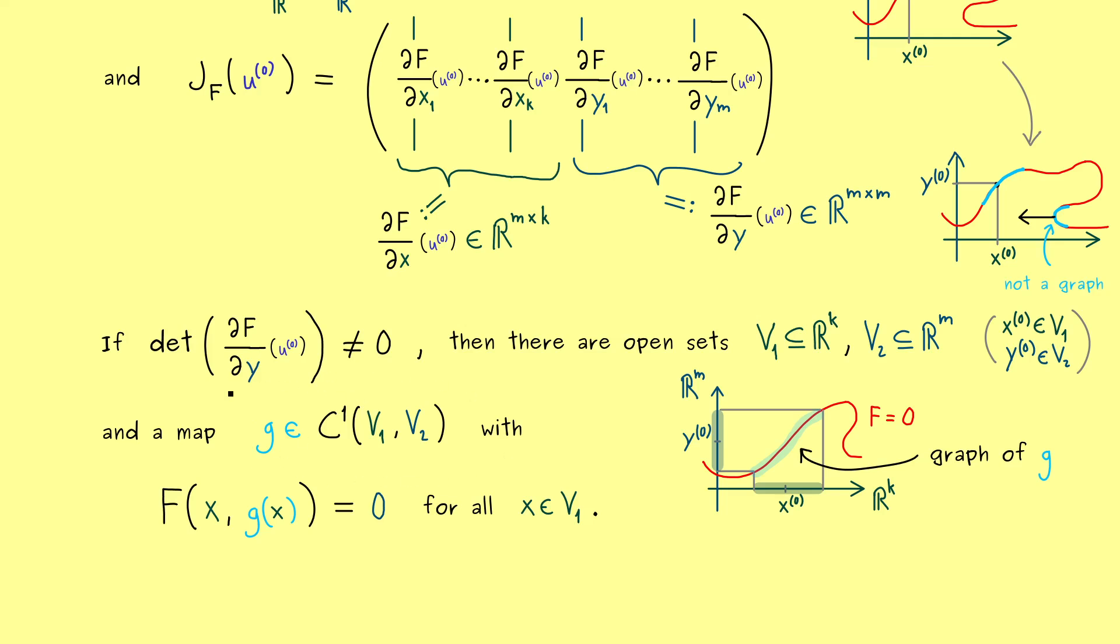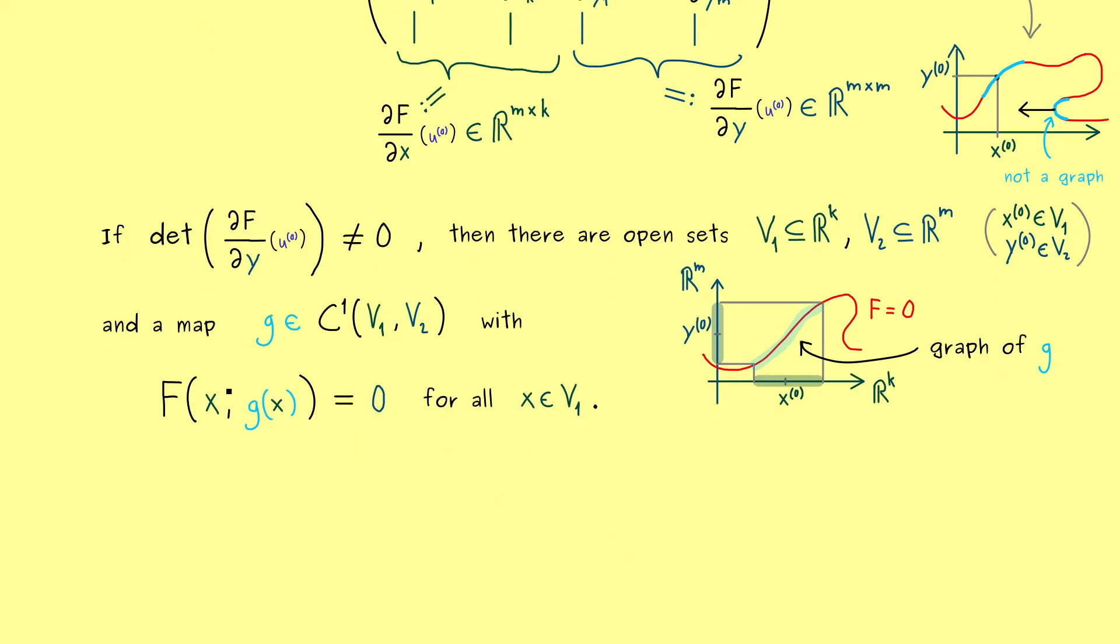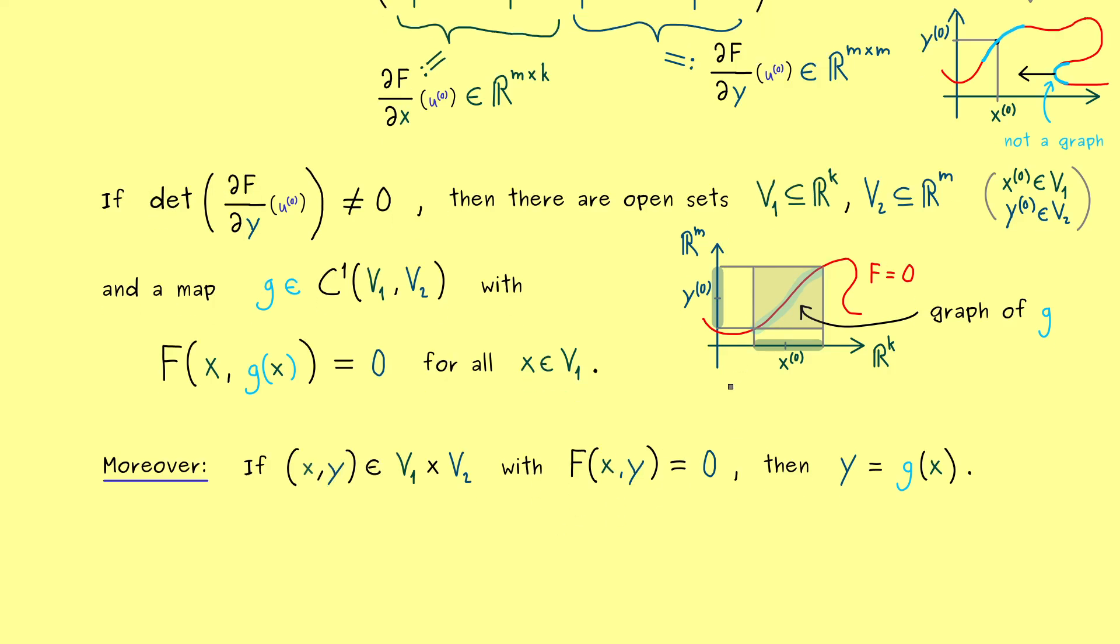And moreover, we can also say something about the derivative of g. Indeed it should be the derivative in the general sense. So we talk about the Jacobian. But before we do that, we should clarify again what we have here. If we take two points x and y. x from V_1 and y from V_2. Such that they lie on the generalized contour line. Which simply means, F of x and y is equal to zero. Then we already have that y is equal to g of x. Hence this means, that V_1 and V_2 are chosen small enough. So visually we see, that no other parts of the contour line lie in this rectangle. So in short, we have that, if we choose V_1 and V_2 small enough.